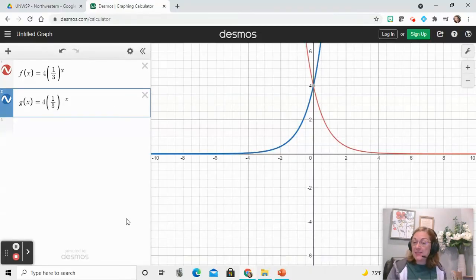You can see here that I've typed in both of our equations. The red one, notice with Desmos using the red here, that is our original.